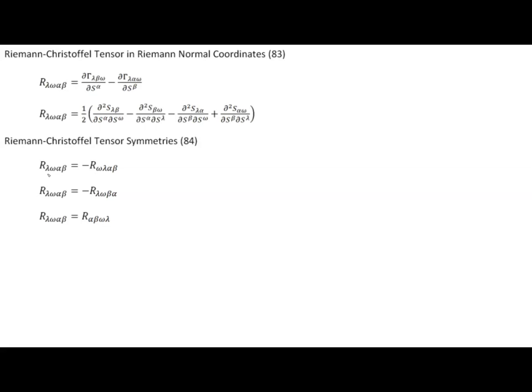We first used this technique to investigate symmetries of the Riemann tensor. The Riemann tensor is anti-symmetric with respect to the first two indexes — swapping index 1 and 2 introduces a negative sign. Likewise, it is anti-symmetric with respect to indexes 3 and 4. But swapping the first and second pair with the third and fourth pair as a whole is a symmetric relationship — we can swap those pairs without changing the value of the tensor.